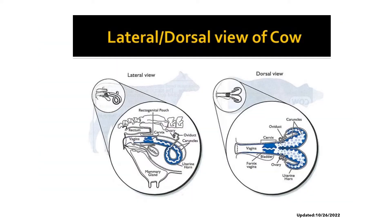This is a lateral and dorsal view of a cow showing its reproductive tract. For the dorsal view, we have here the parts of the reproductive tract starting with the ovary, the oviduct, the horn of the uterus, the body of the uterus, the cervix, and the vagina. We also have here the lateral view showing the different parts of the reproductive tract: the ovary, the oviduct, and the tubular organs.